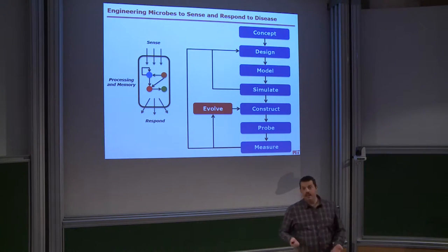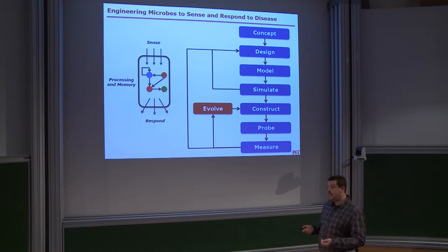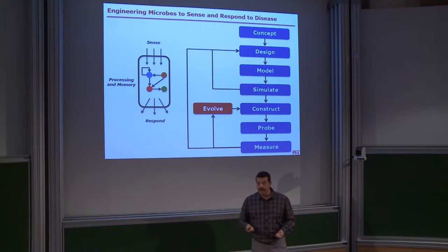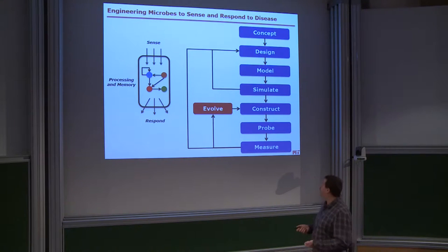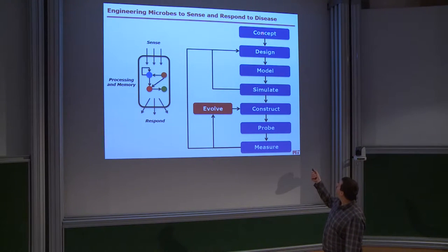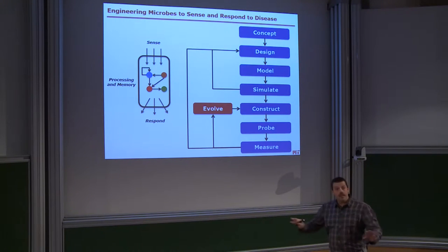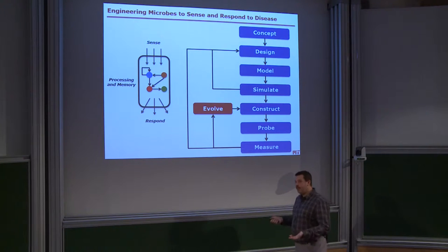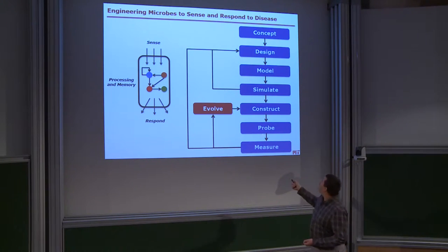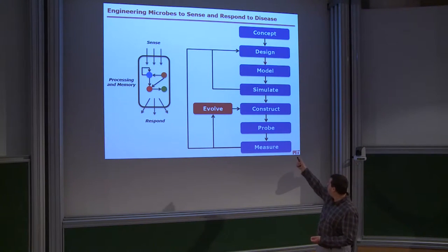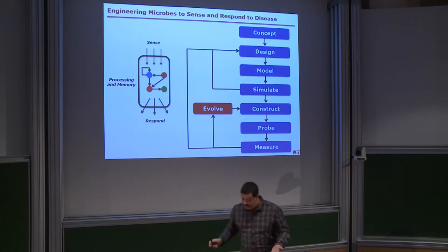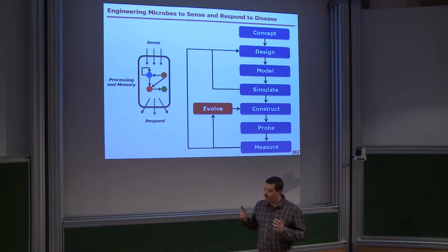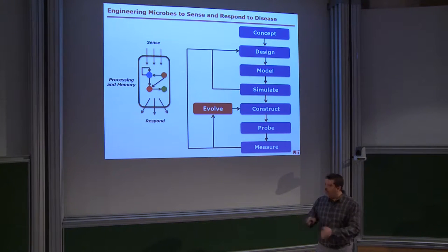We expect that synthetic biology, with its capability to design desired functions inside microorganisms, can help design microbes that will face this challenge. The common description of synthetic biology involves a concept leading to a design that may be modeled and simulated, then constructed, probed in vitro, measured, and possibly evolved if something is not optimal — iteratively until you build what you want. At MIT, as an engineering school, we are very much for that top-down approach where you have an idea and you will build it.